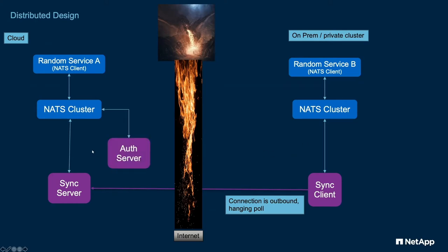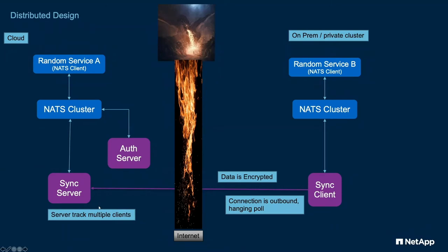When we do this, we also need to add in an auth server, because when we register the sync client with the sync server, we really need to have some sort of authorization. All the data is encrypted — not only via the HTTPS mechanism we use to connect from the sync client to the sync server, the data is also encrypted separately. And this is all multi-tenant: the server tracks multiple clients, and data cannot cross between clients through basic multi-tenant security.